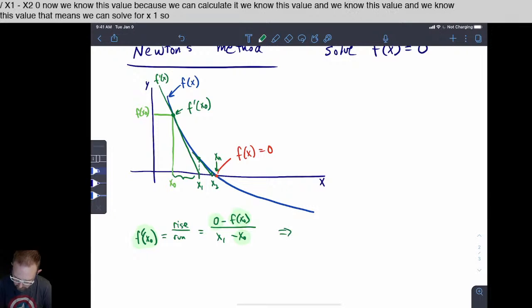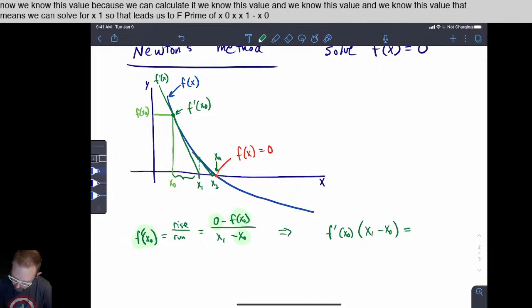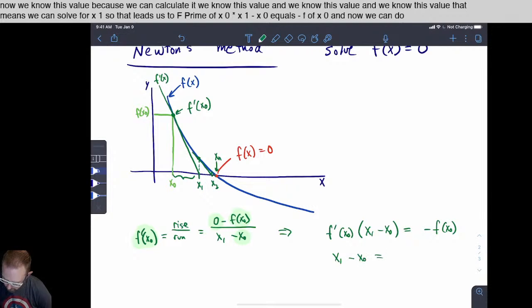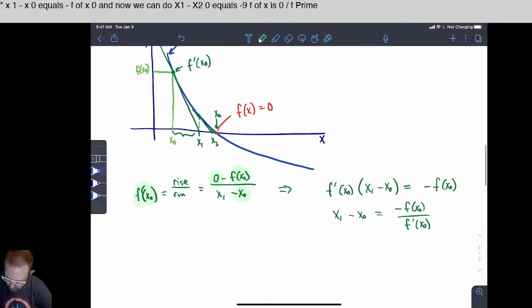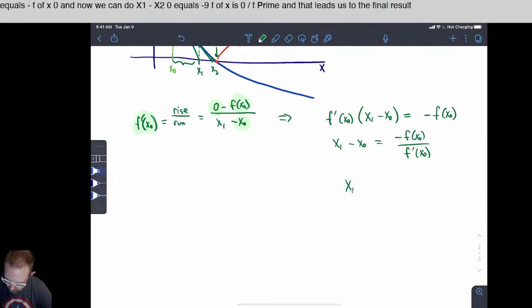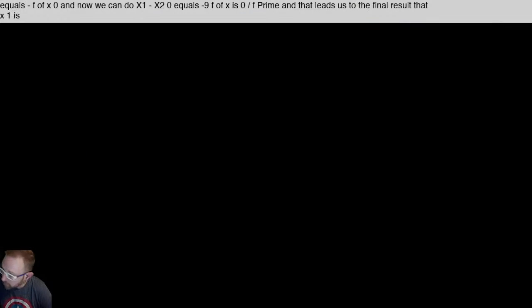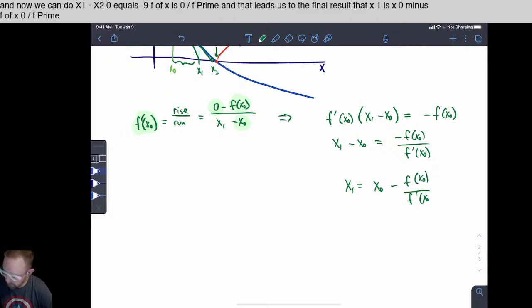So that leads us to f prime of x zero times x one minus x zero equals minus f of x zero. And now we can do x one minus x zero equals minus f of x zero over f prime of x zero. And that leads us to the final result that x one is x zero minus f of x zero over f prime of x zero.